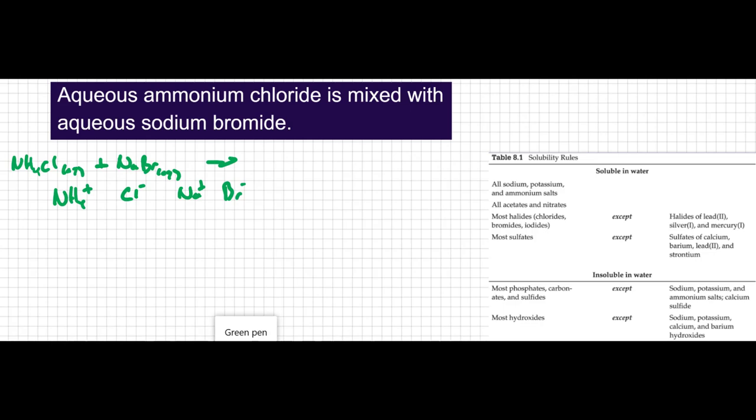Here's our double replacement setup where we're going to swap partners. So the NH4 is going to start dancing with the Br, so I'm going to make NH4Br, and the Na is going to combine with the Cl to make NaCl. Now this is nice because everything is balanced as written, it's a 1 to 1 to 1 to 1 ratio.